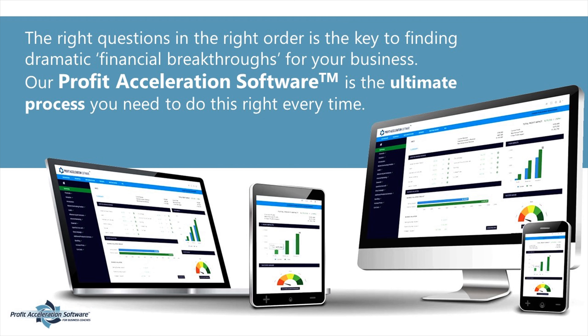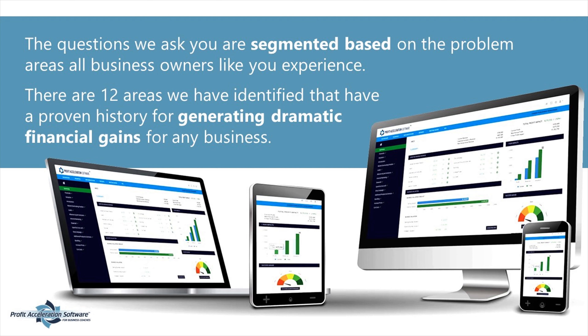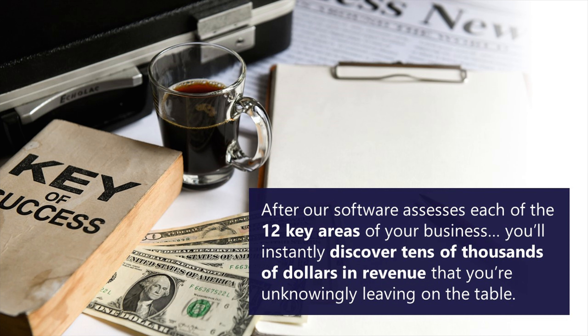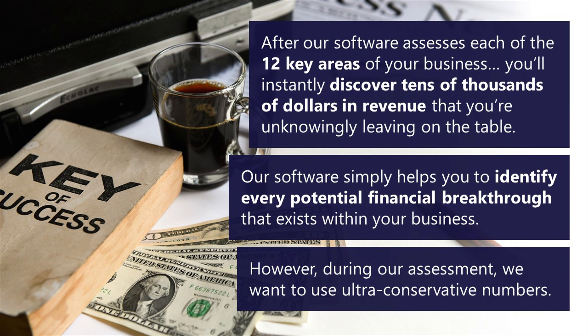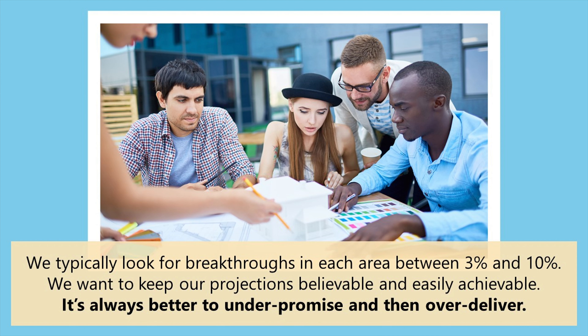The right questions in the right order is the key to finding dramatic financial breakthroughs for your business. Our profit acceleration software is the ultimate process you need to do this right every time. The questions we ask are segmented based on the problem areas all business owners experience. There are 12 areas we've identified that have a proven history for generating dramatic financial gains for any business. During our assessment, we use ultra-conservative numbers — typically looking for breakthroughs in each area between 3% and 10% — to keep our projections believable and easily achievable.